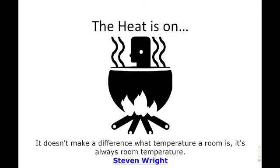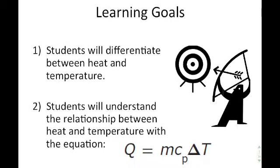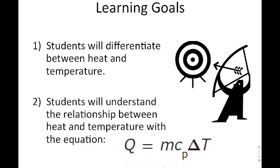Our learning goals are: number one, that you'd be able to differentiate between heat and temperature. A lot of times they're used interchangeably in common everyday language, so you need to be able to tell the difference. Also, you should understand the relationship between heat and temperature with the equation Q equals MC delta T — an equation from your star chart — so you should be able to use it to solve for any unknown variable.